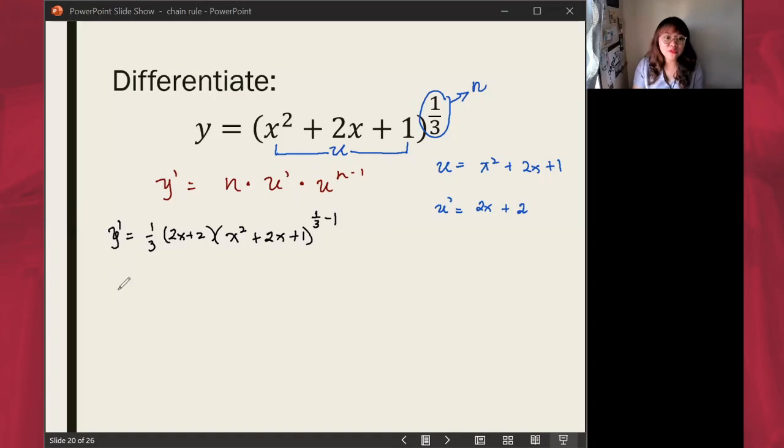Let's simplify what we can simplify. So y' equals 2x plus 2 over 3. Let's keep the parenthesis to remind us that it is actually multiplied to this expression here. So we have x squared plus 2x plus 1. One-third minus 1, that will just be negative two-thirds.